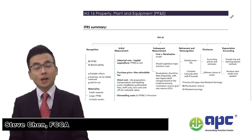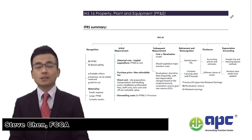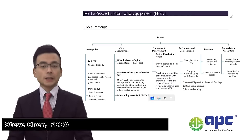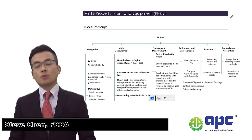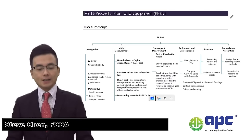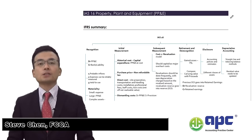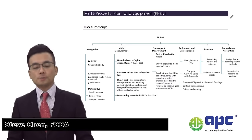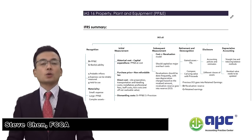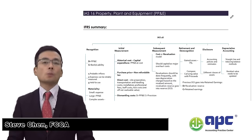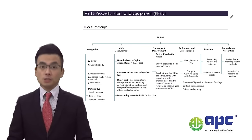Welcome back. Now let's look at IAS No. 16, Property Plant and Equipment, or PP&E. Property refers to land and building, the plant is the factory, and the equipment is the computer and other equipment used in production processes or for administrative purposes.